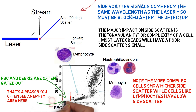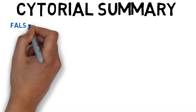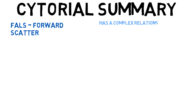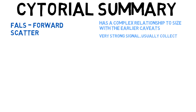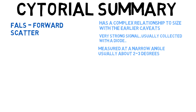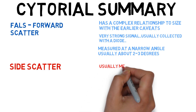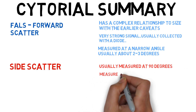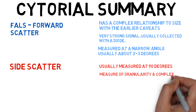In summary, here are our findings on light scatter. For forward scatter — also called FALS and narrow angle scatter — we've identified a complex relationship between size and scatter, with the caveat that non-spherical cells should not be considered linear with respect to forward angle scatter. Since the signal is strong, we can measure it with a low-cost diode, and we mostly measure FALS at about 2 to 3 degrees. Regarding side scatter, that is usually measured at 90 degrees to the laser beam, also called orthogonal scatter or wide angle scatter. It is a measure of granularity and complexity, and combined with forward angle scatter it can be very useful in differentiating several different cell populations.